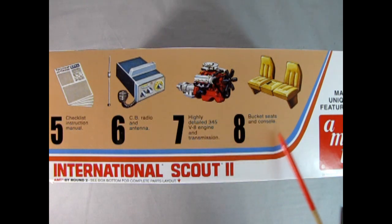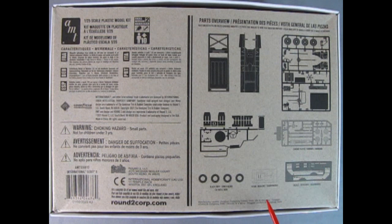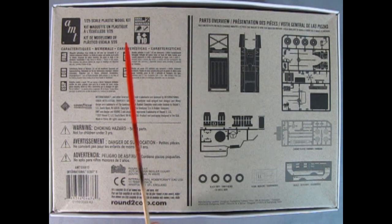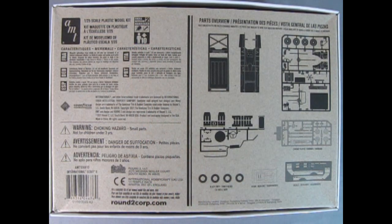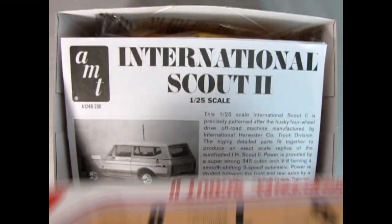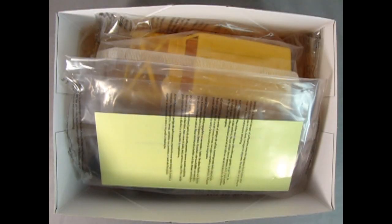Number five, we have a checklist instruction manual. Number six, a CB radio and antenna. And number seven, a highly detailed 345 V8 engine and a transmission. Then finally number eight, bucket seats and a console. On the bottom of the box we have these silhouettes of all the parts as well as a decal sheet, the clear and the chrome and the tires. This is for skill level 2 for ages 10 and up.